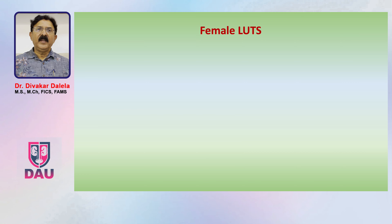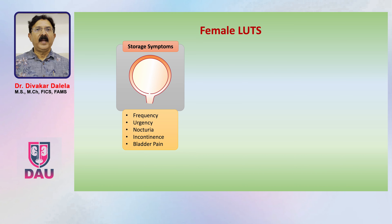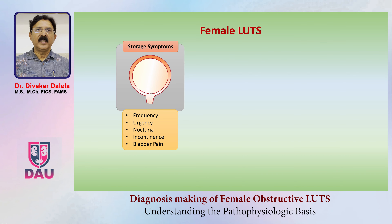The female lower urinary tract symptoms can either belong to the storage phase of urinary bladder, which are known as storage symptoms. In this we include frequency, urgency, nocturia, incontinence, and the bladder pain which patients experience in the suprapubic area or sometimes in the genital area.